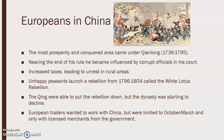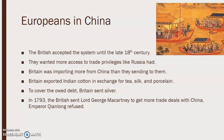European traders wanted to work with China but were limited to only October through March, and only with licensed merchants from the government. The British accepted this system until the late 18th century, when they wanted more access to trade privileges like Russia had. Britain was importing more from China than they were sending to them, and they also exported Indian opium in exchange for tea, silk, and porcelain. To cover the owed debt, the British would send silver. In 1793, the British sent Lord George Macartney to get more trade deals with China, but Emperor Qianlong refused.